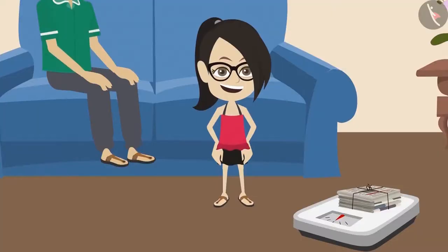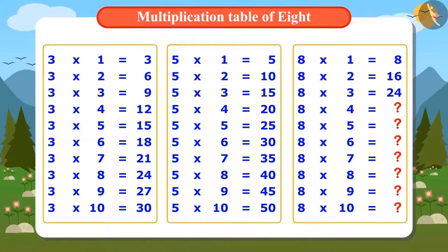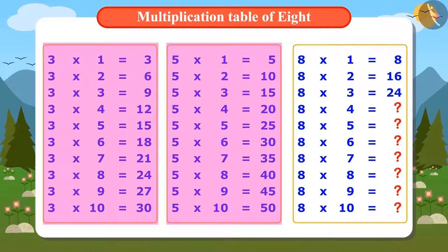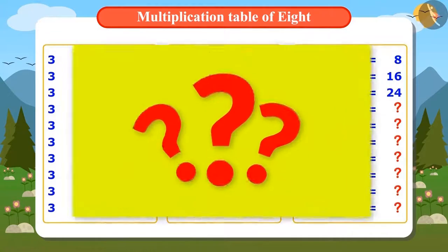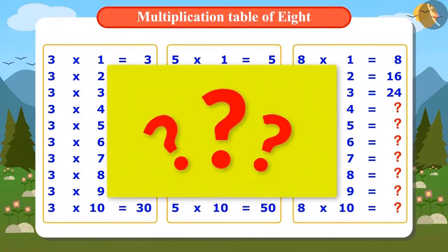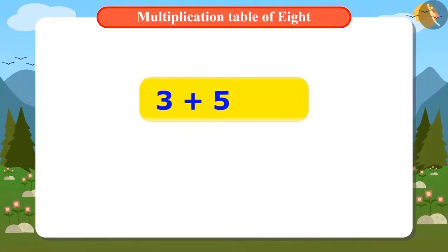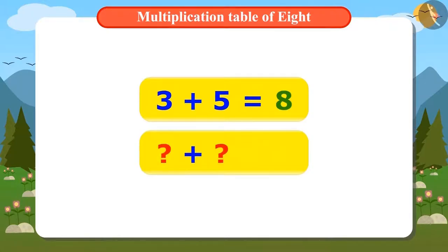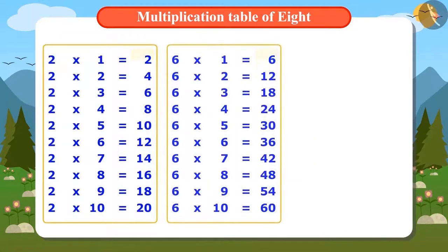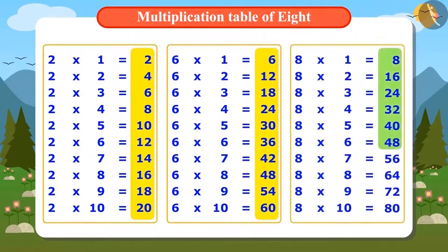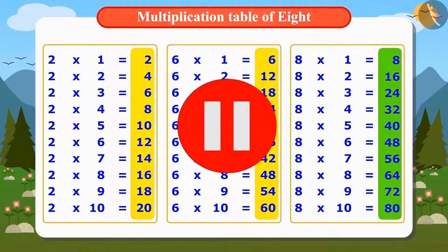Vandana has understood how to find the multiplication table of 8. Can you find the table of 8 using any multiplication tables besides these? Just like adding 3 and 5 gives 8, you need to find two smaller numbers that add up to 8. For example, adding 2 and 6 also gives 8. This means you can also find the table of 8 by adding numbers from the multiplication tables of 2 and 6. Pause the video and write down the full table of 8.